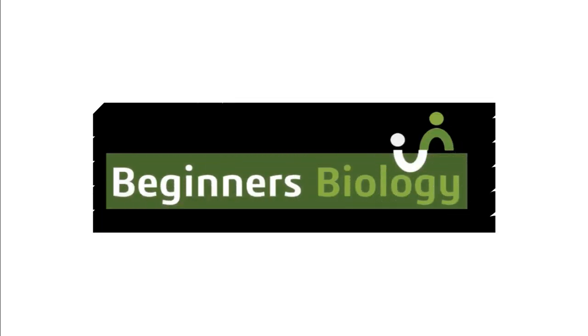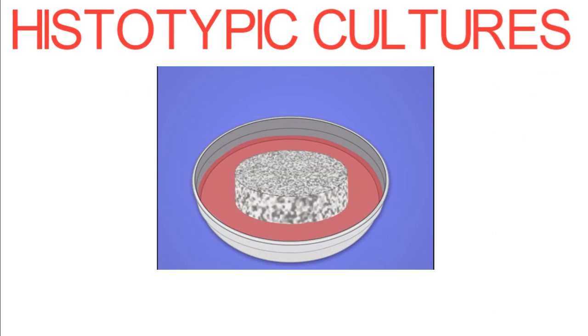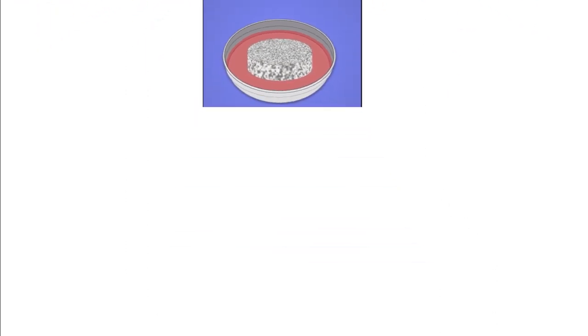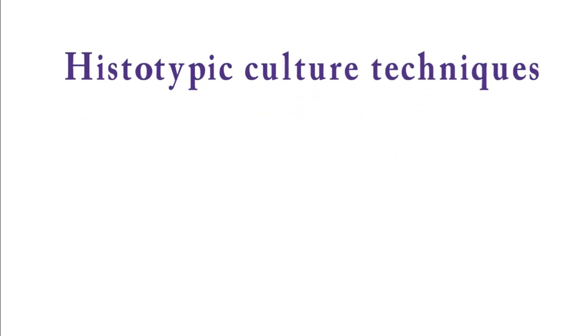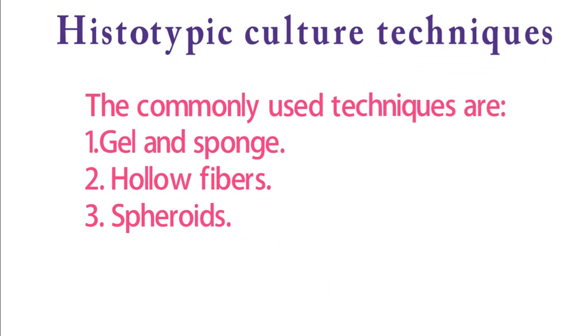Welcome to Beginners Biology. In this video, let's discuss histotypic cultures. In histotypic cultures, the growth and propagation of cell lines occurs in a three-dimensional matrix, thereby creating in-vitro tissue morphologies. There are three types of histotypic culture techniques: gel and sponge technique, hollow fiber technique, and spheroids.